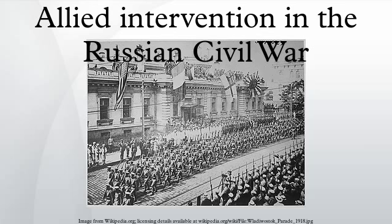In 1917, Dunsterforce, an Allied military mission of under 1,000 Australian, British, and Canadian troops, accompanied by armoured cars, deployed from Hamadan some 350 kilometres across Qajar Persia. It was named after its commander, General Lionel Dunsterville.